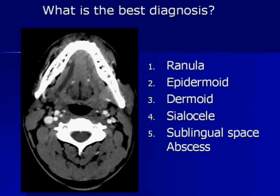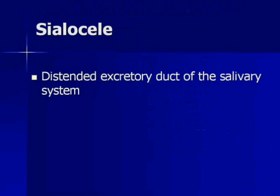Is it one, ranula; two, epidermoid; three, dermoid; four, silocele; five, sublingual space abscess? The answer is silocele — you guys did pretty well. So what exactly is a silocele?